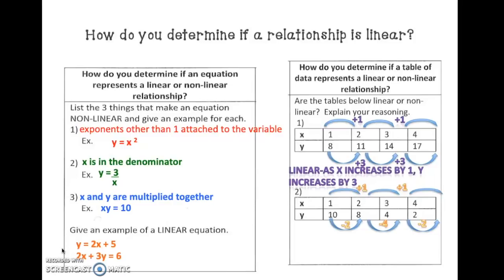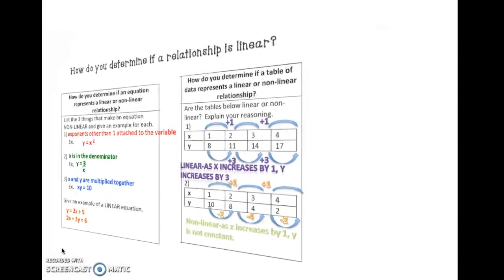So for x, I can see there's a constant rate of change — it's increasing by 1. But what's happening to y? Negative 2, negative 4, negative 2. I do not have a constant rate of change. So this table is non-linear. As x increases by 1, y does not have a constant rate of change, so we can say it's non-linear.